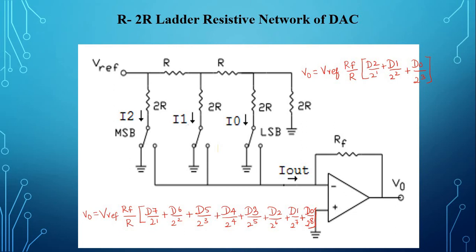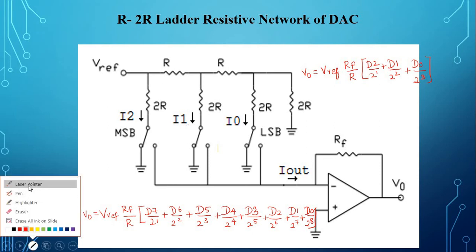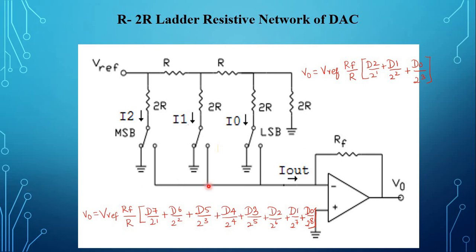The time required for converting a digital signal to an analog signal is called conversion time. It depends on the response time of the switching transistors and the output amplifiers. If the DAC is interfaced to the microprocessor, the digital data should remain at the inputs of the DAC until the conversion is completed. Hence, to hold the data, a latch is provided at the input of the DAC.